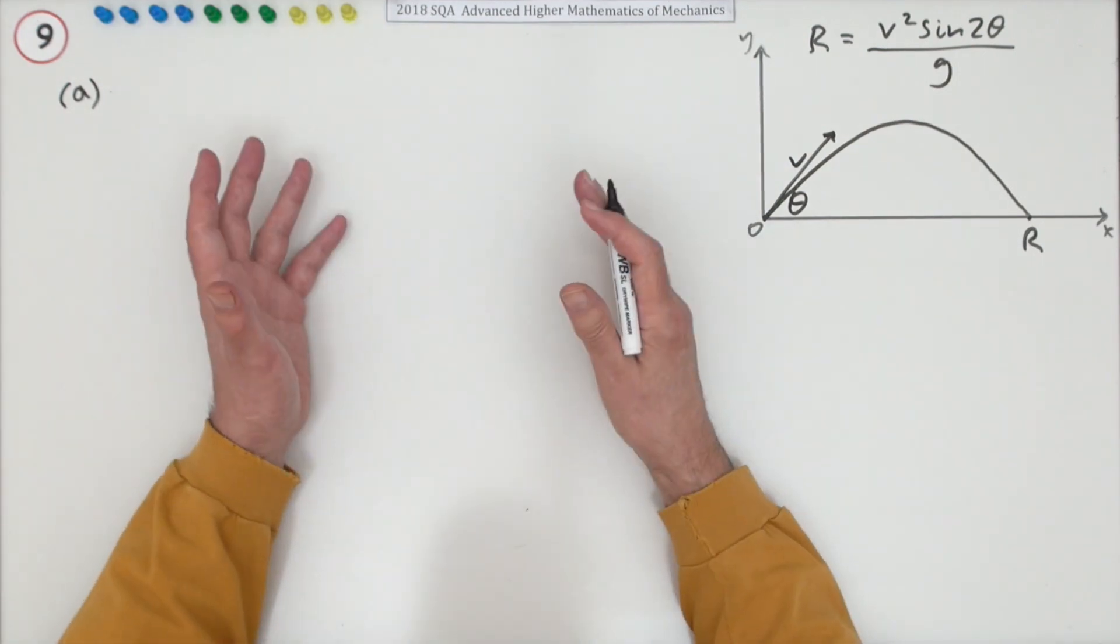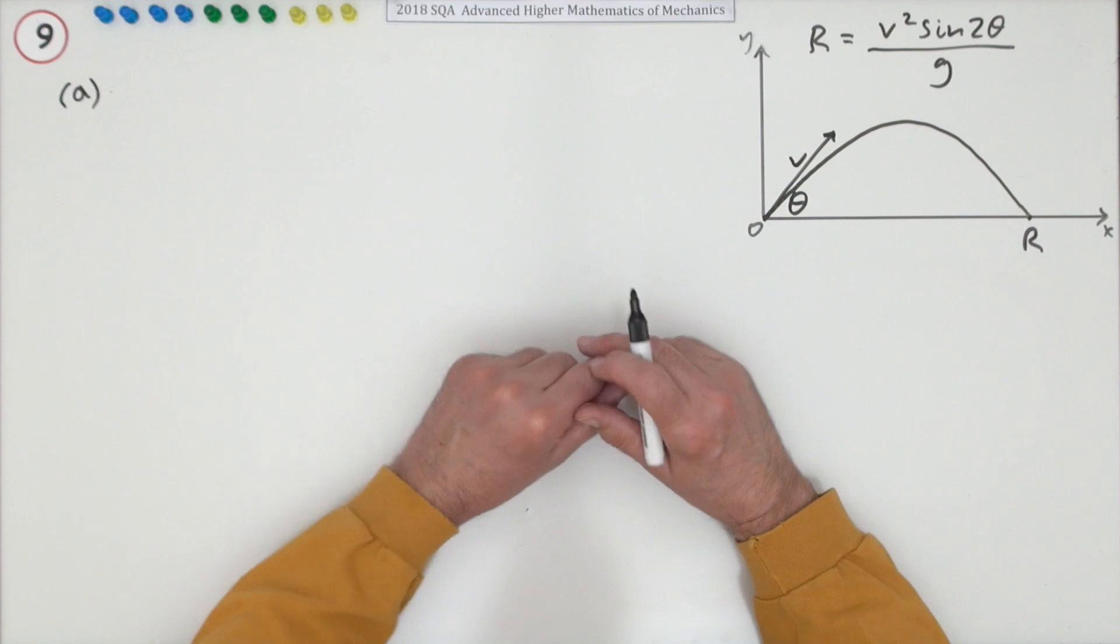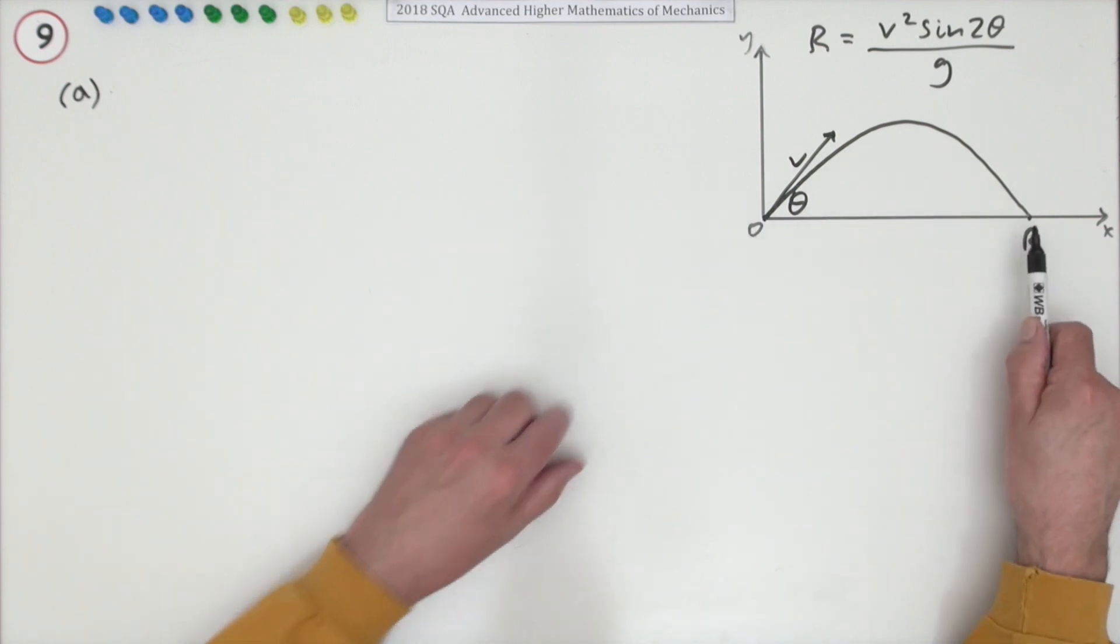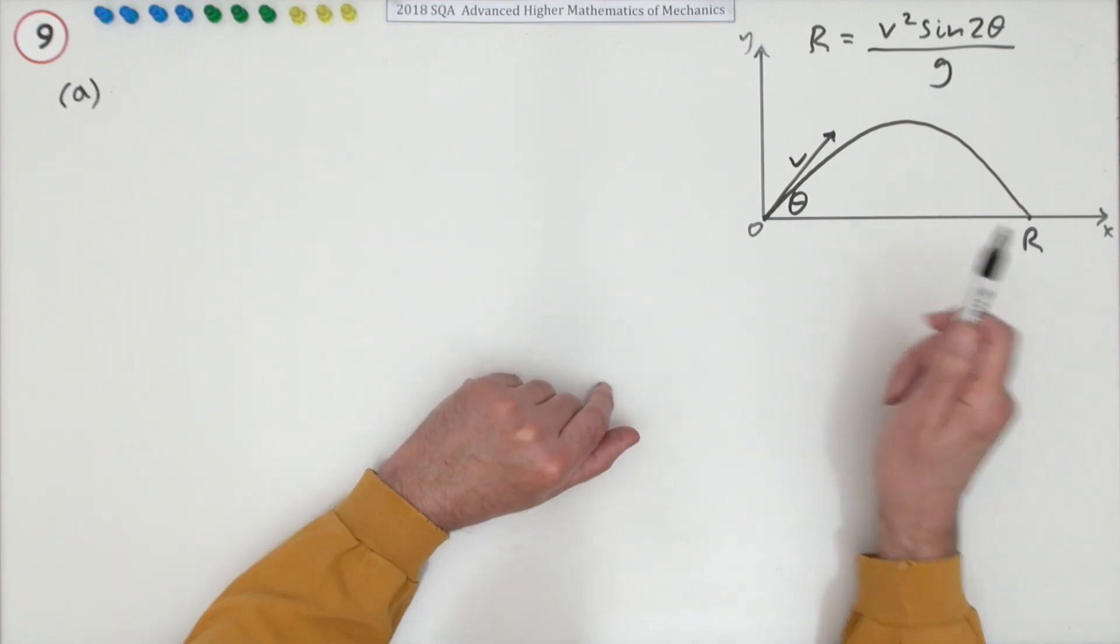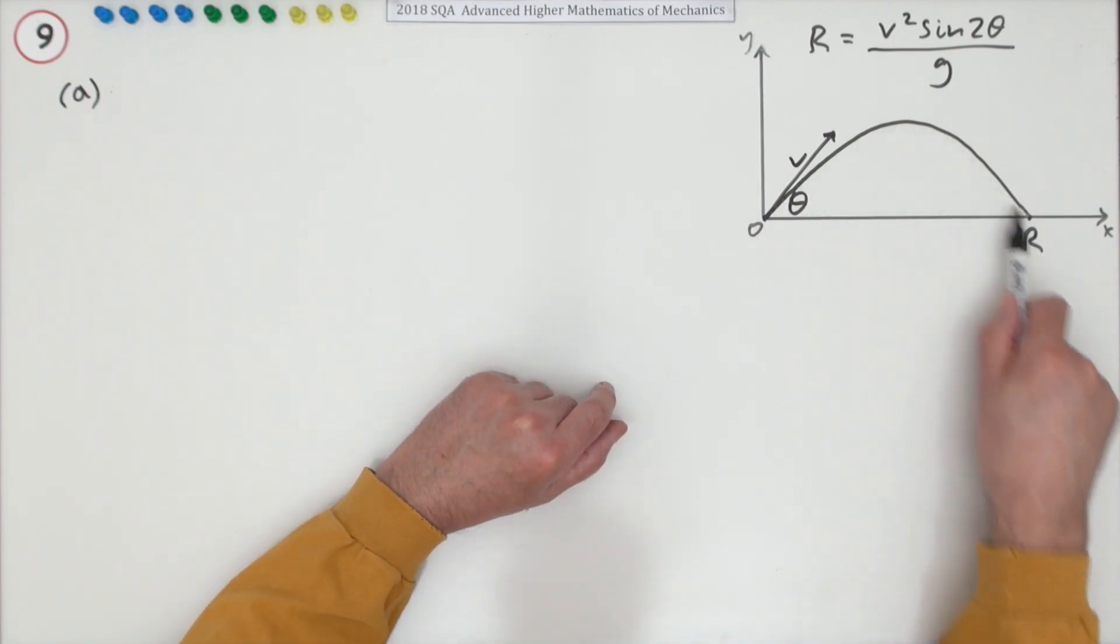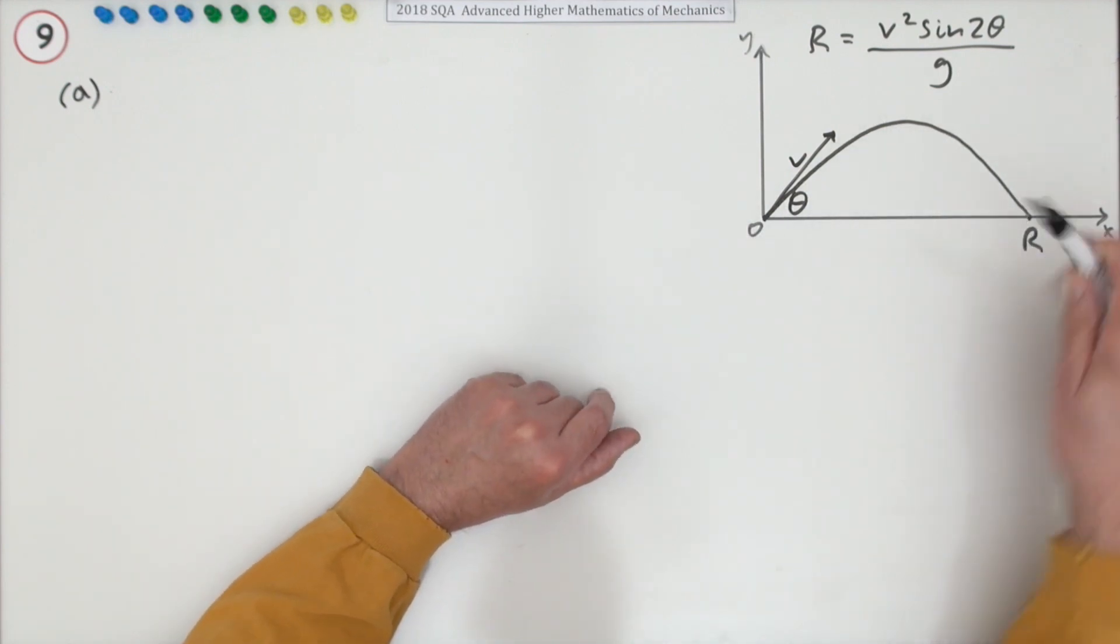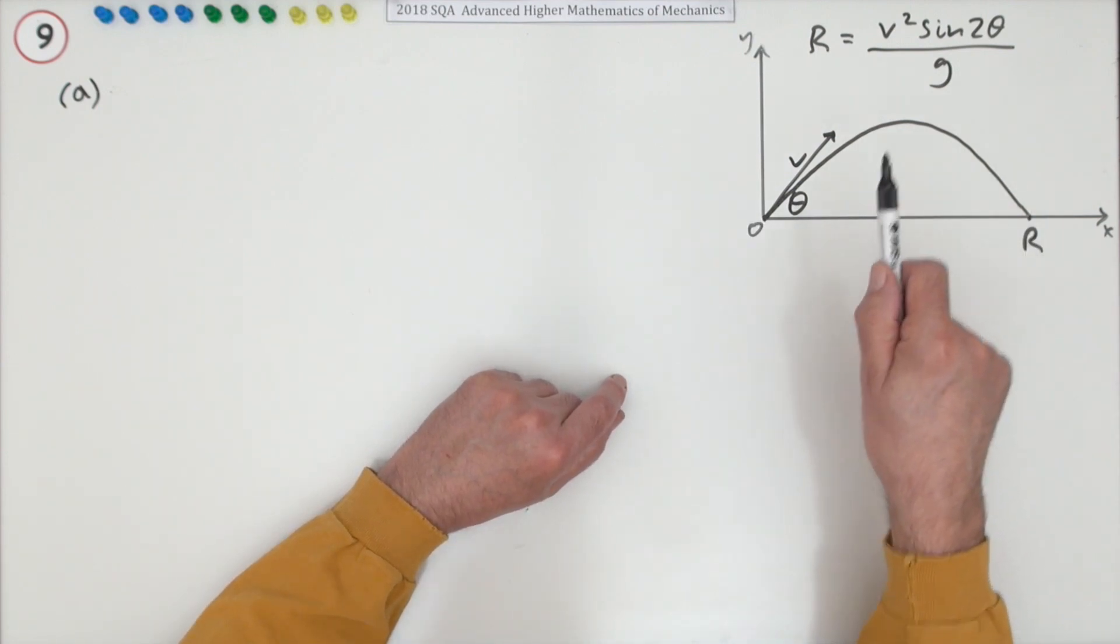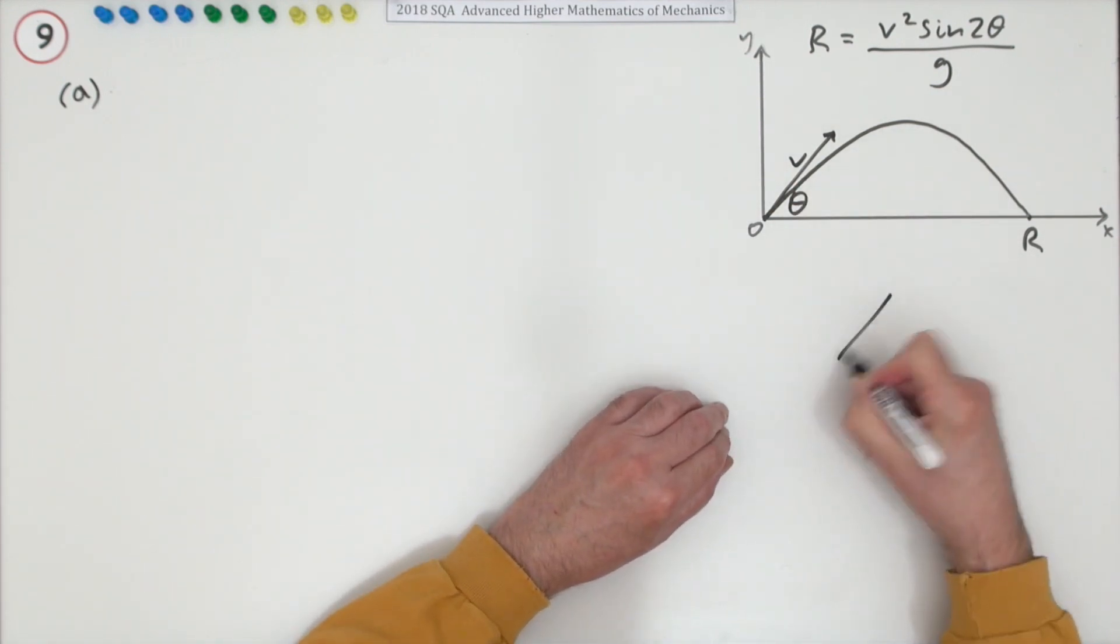Show that the horizontal range is given by this expression here for four marks. Now in the marking scheme that shows actually three methods for doing this, but there's really just one method and just different ways of setting out, which is basically this. It'll hit the ground when it runs out of time in the air. It's all about how long does it stay in the air, and for that there's a couple of methods. You can either say that the time spent in the air is twice the time it takes to get to the top because this is a symmetrical parabola if there's no air resistance, or the other way would be to get an equation for the height and say the time taken will be the time taken for the height to get back to zero.